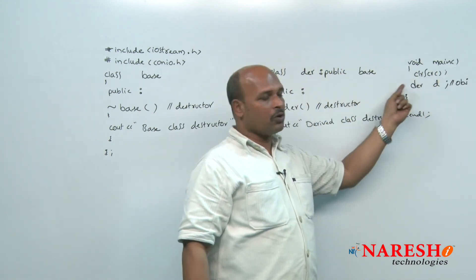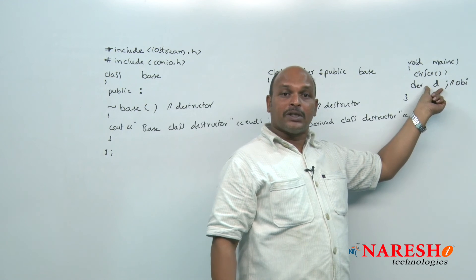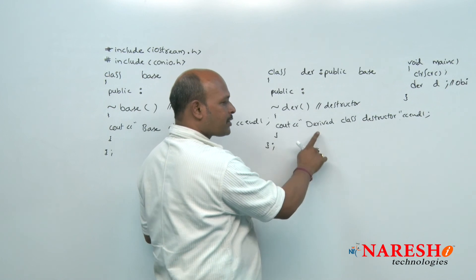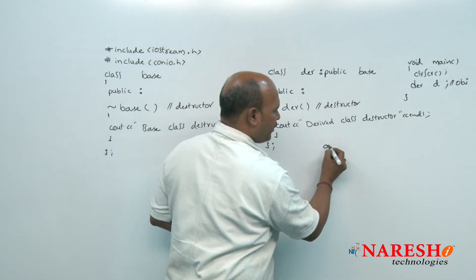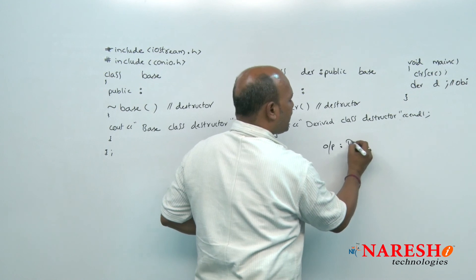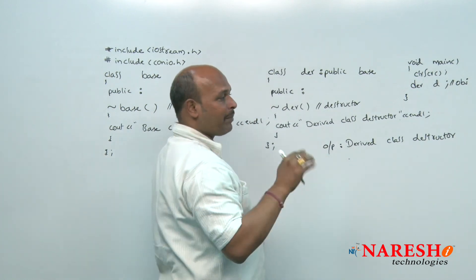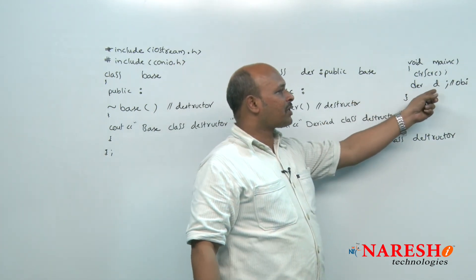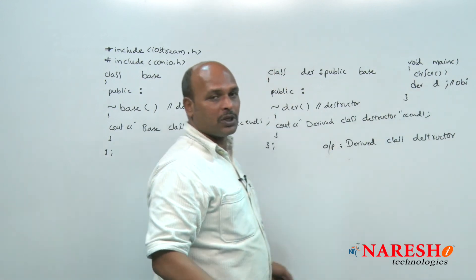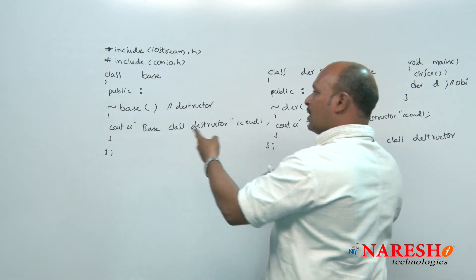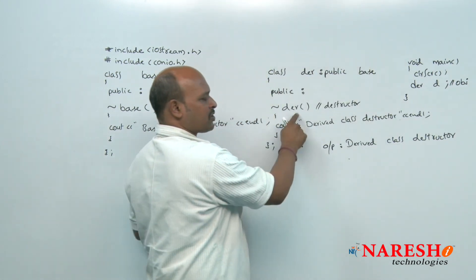When the block is closed, the destructor of derived class executes — so the first output is "derived class destructor". And next, when the derived class destructor's object is going out of scope, the base class destructor is already bound with the derived class destructor in the last line. That means implicitly it is also added, and "base class destructor" is printed as the second output.